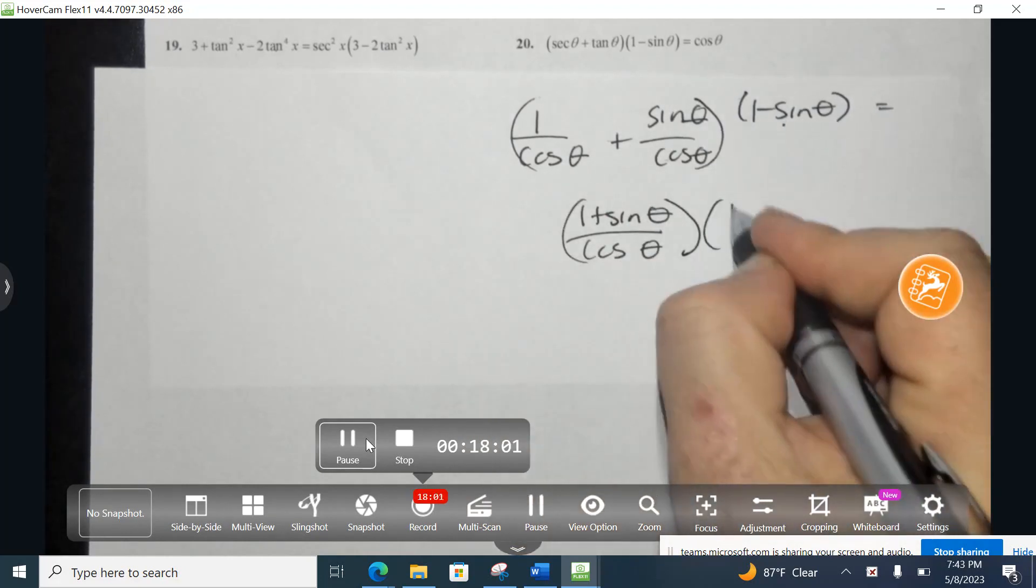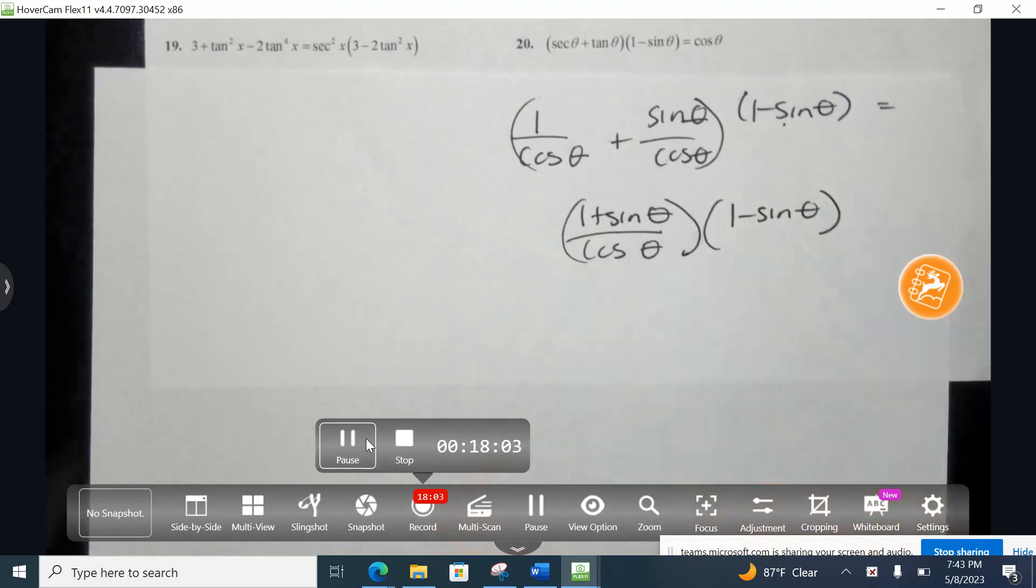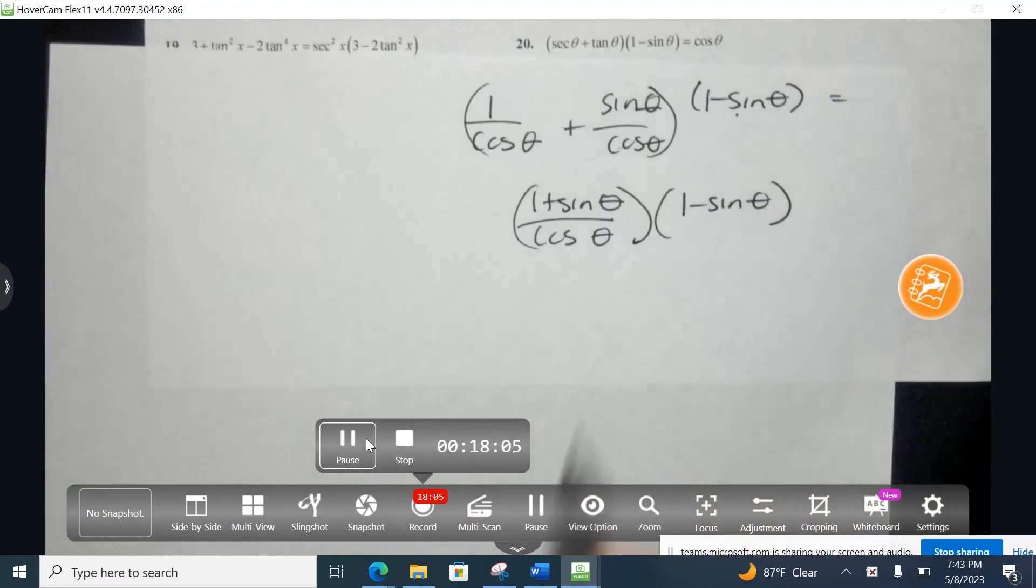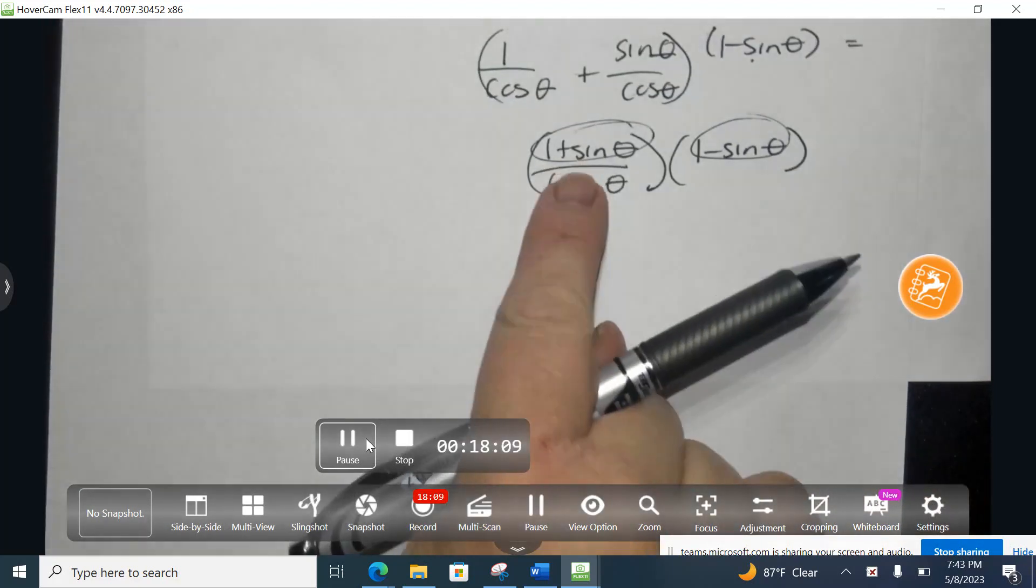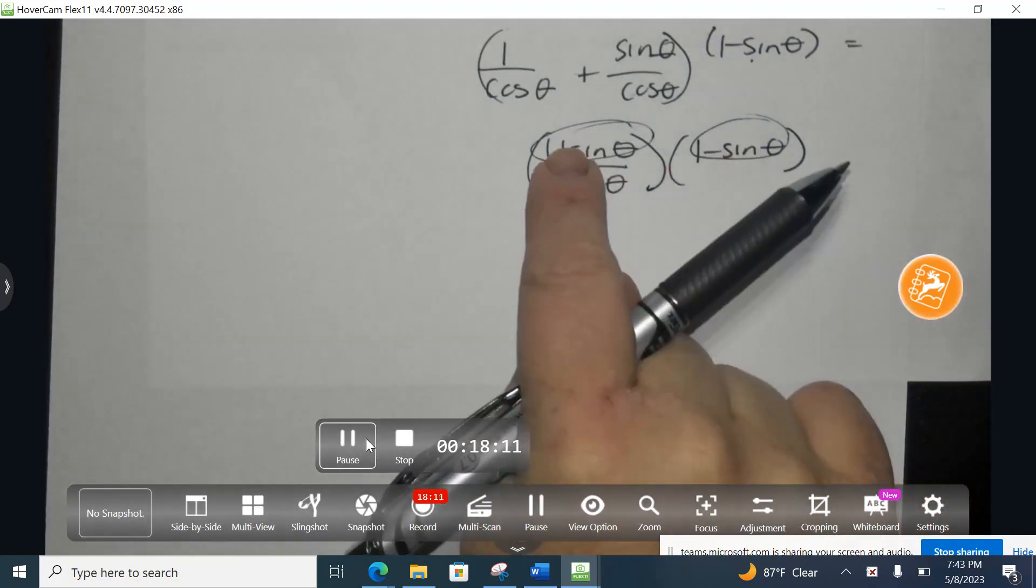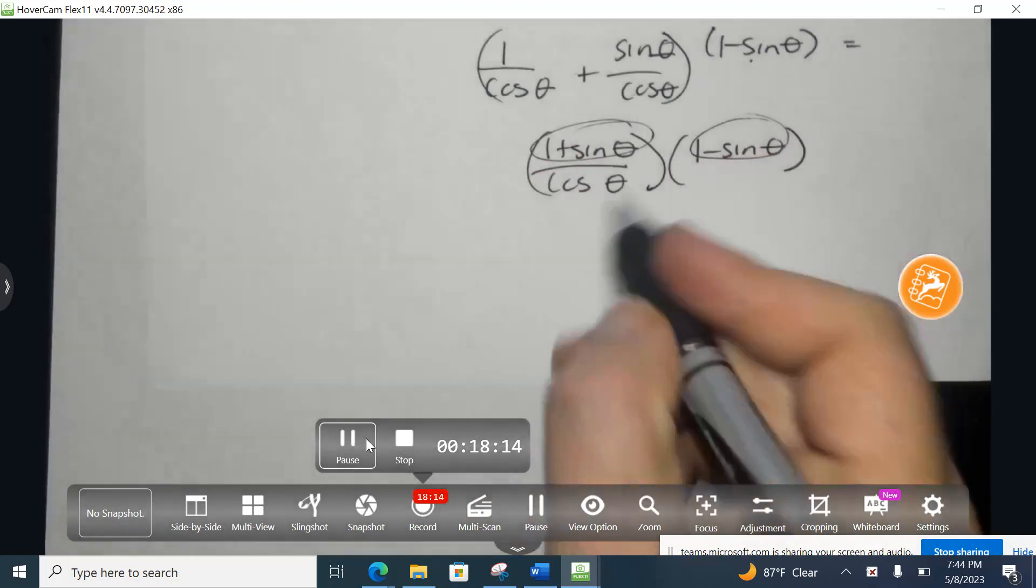And over here, I have 1 minus the sine. Okay? And so I'm going to go ahead and I'm going to foil these two groups. Now, if you've caught on right now, when you have the exact same thing in both parentheses, the only difference is a plus or minus.